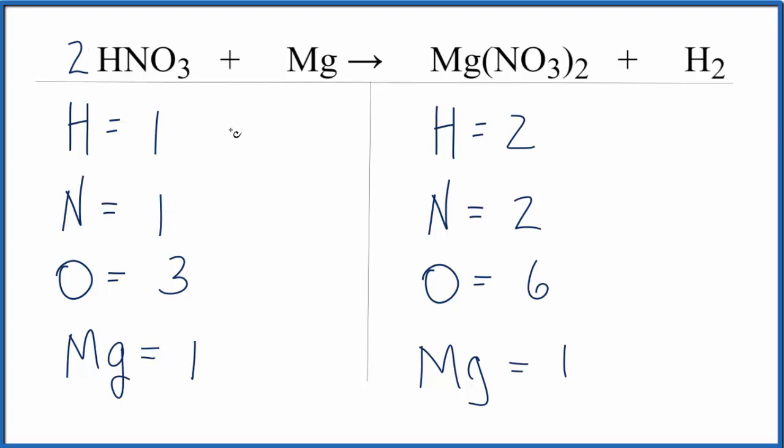So we have hydrogens: one times two, that's two. Nitrogens: one times two equals two nitrogens. Three oxygens times two gives us six oxygens.